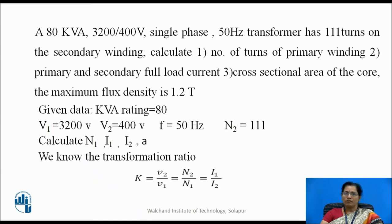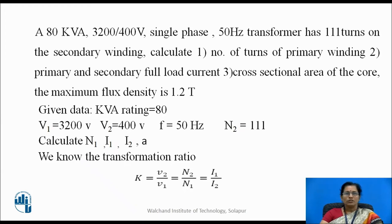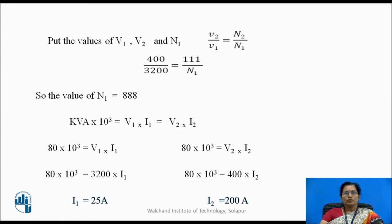We need to calculate N1, I1, I2, and cross-sectional area A. Using the transformation ratio K = V2/V1 = N2/N1, substituting values: 400/3200 = 111/N1. After calculation, N1 = 888 turns.